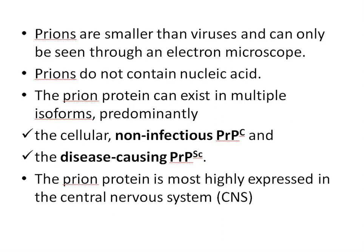This prion protein can exist in multiple isoforms. The predominant forms are: number one, the cellular non-infectious PRPC form, and second, the disease-causing PRPSC form. Prion protein is most highly expressed in the central nervous system, but it can be found in other tissues and cell types as well.